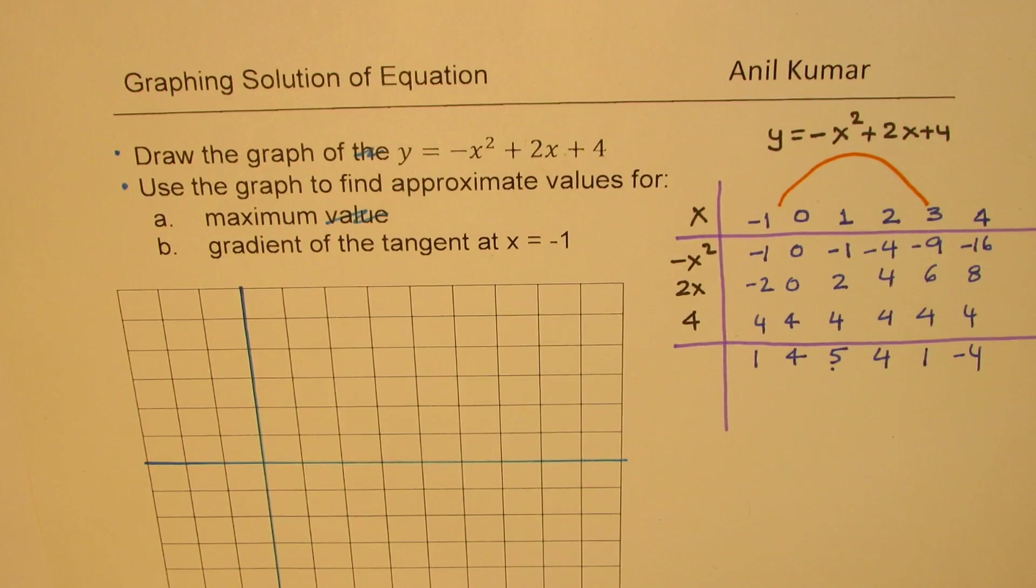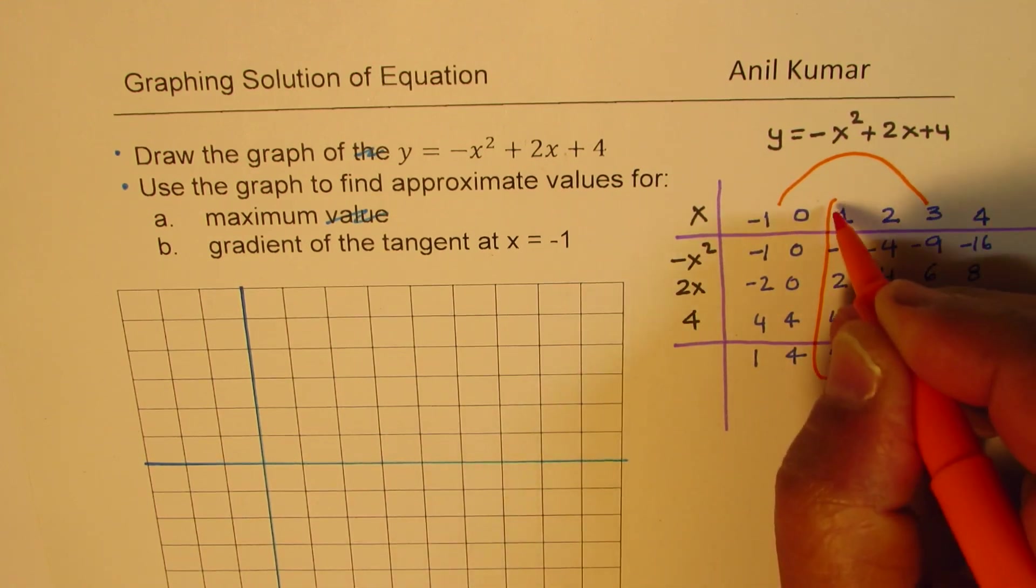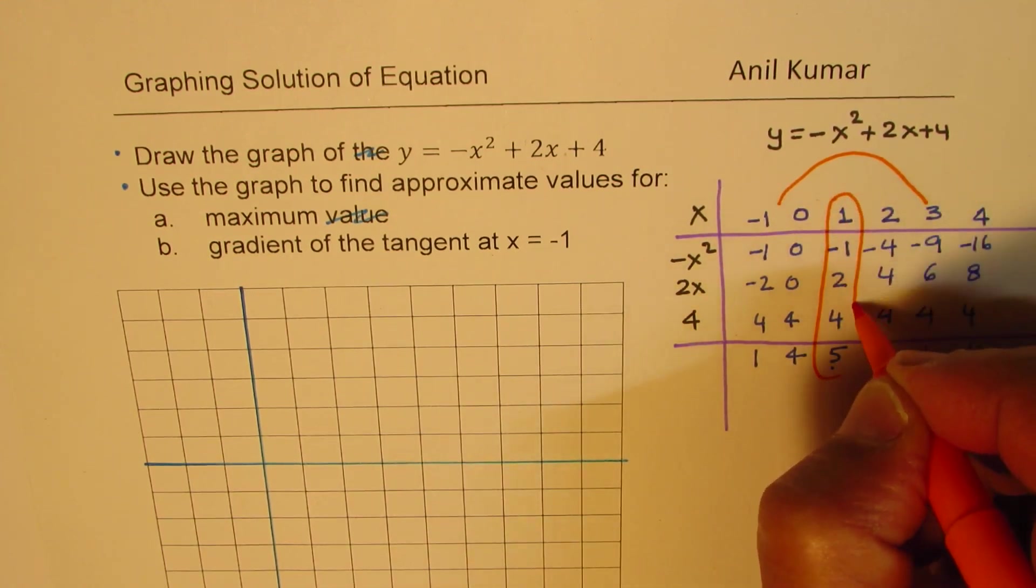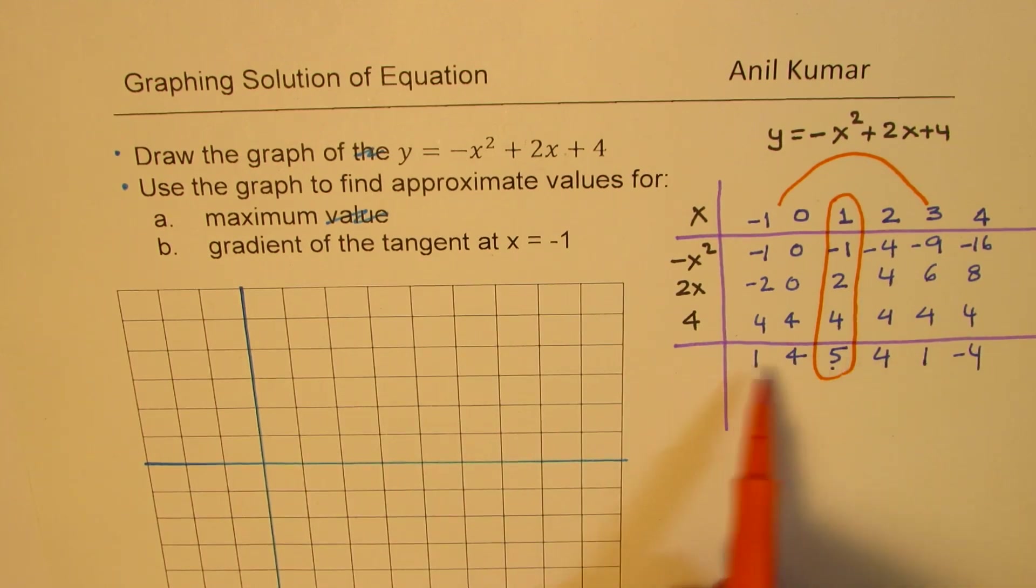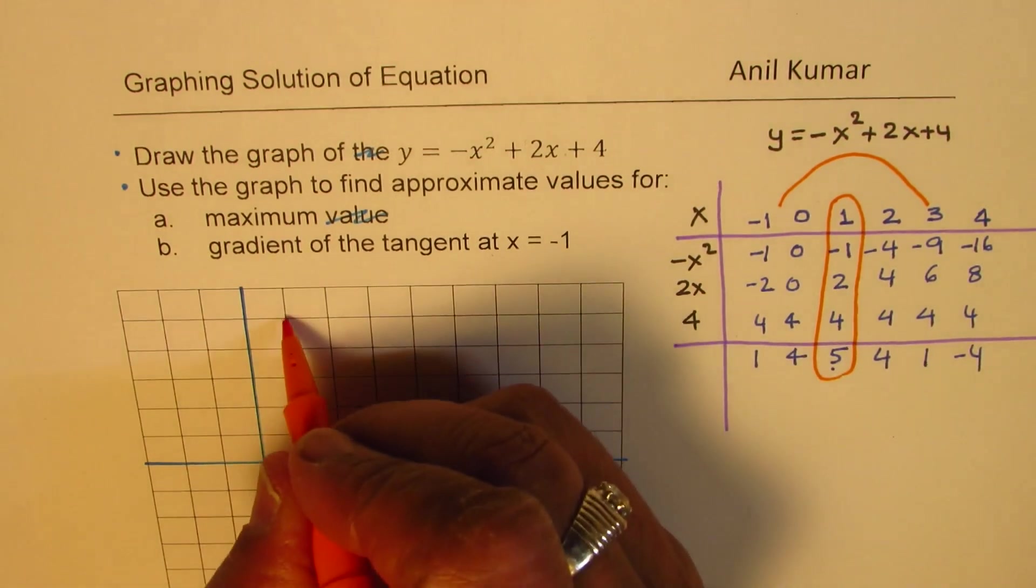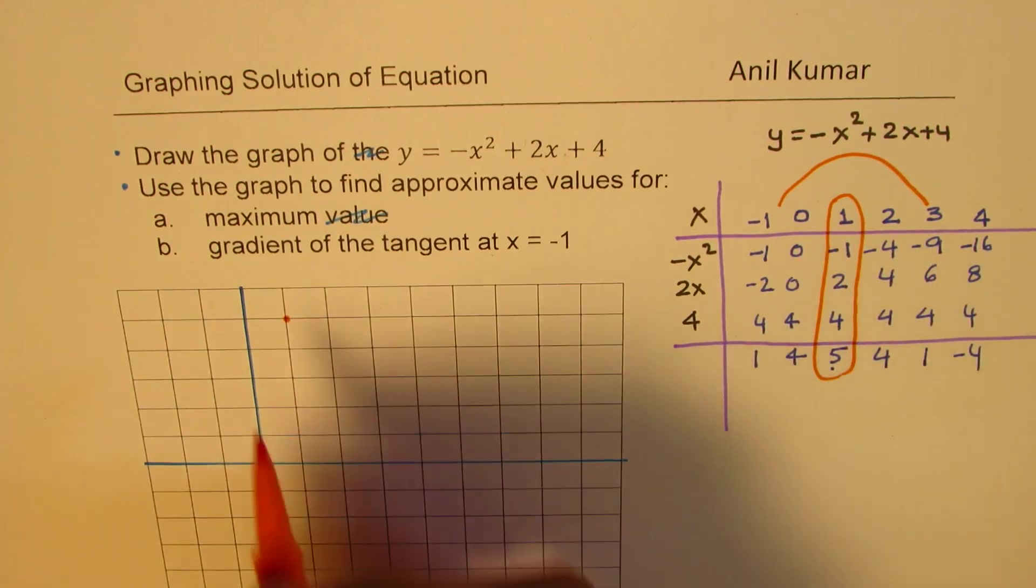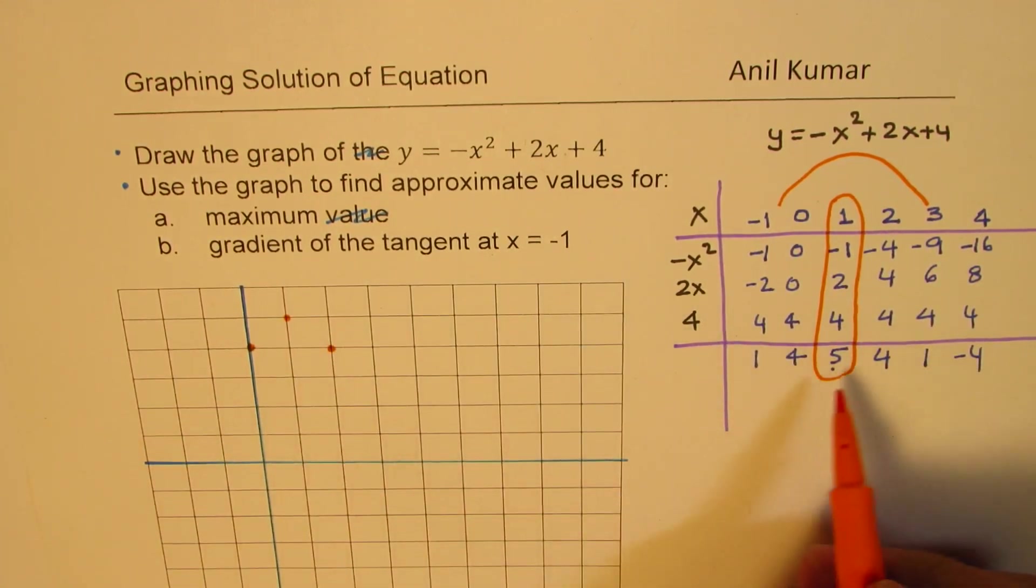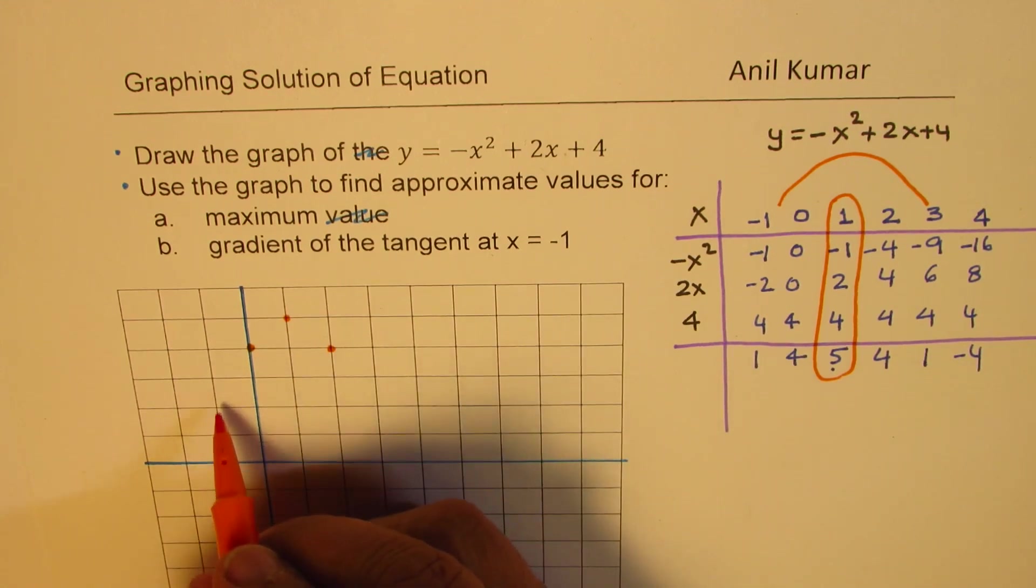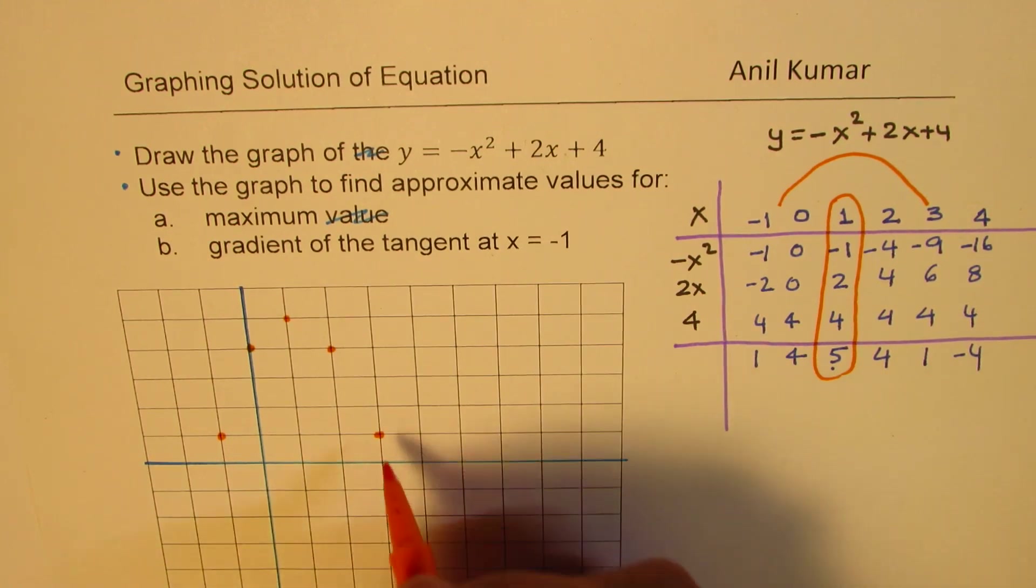To sketch the points, we may begin with the maximum itself. We clearly see that this gives you maximum. At 1, we have 5. That becomes the axis, and we can plot the other points. At 1, we have 5: 1, 2, 3, 4, 5. Then, at 2 and 0, we have 4. From the symmetry, we can get those points. Then, we have 1 here.